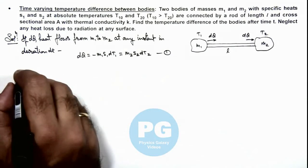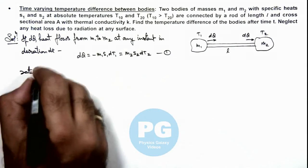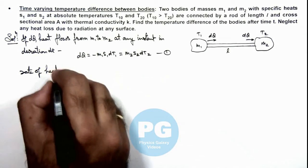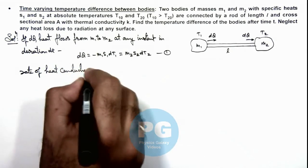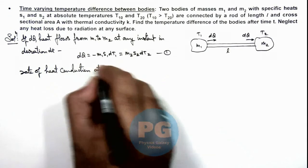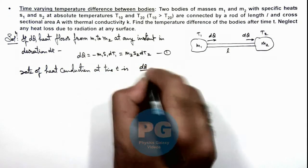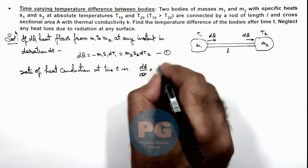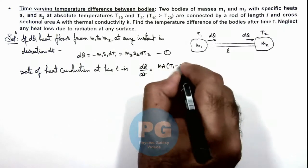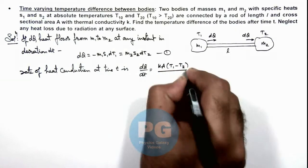And if we talk about the rate of heat conduction at time t, this dQ/dt we can write as simply kA(T₁ - T₂) divided by l.